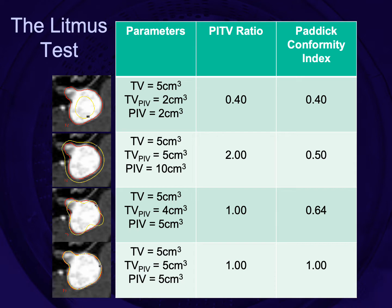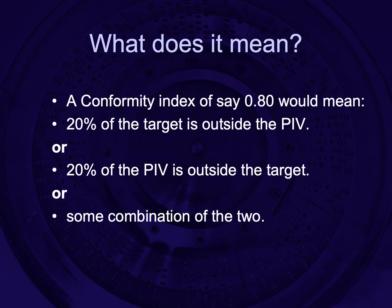In this slide we can see four different treatment plans and apply both the PITV ratio and the Paddock conformity index. Plan 3, where the prescription isodose volume is the same magnitude as the target volume, gets a false perfect score with the PITV ratio — showing that index's disadvantage — while the Paddock conformity index accounts for target coverage and gives a poor score. A conformity index of 0.8 could mean 20% of the target is outside the prescription isodose, or 20% of the isodose volume is outside the target, or some combination, which is far more likely given the compromise between coverage and selectivity.